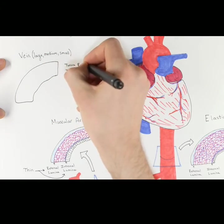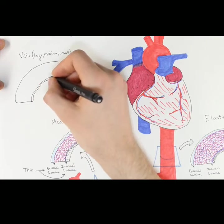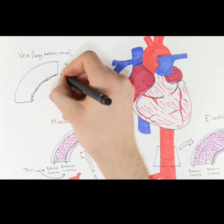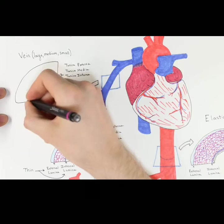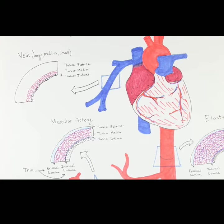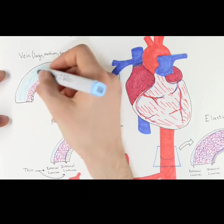Veins still have a single layer of endothelial cells that compose the tunica intima, which I've drawn in here. They have a tunica media, which is thinner than what we've seen previously, and it also has an outer coating of connective tissue that's made of tunica externa.